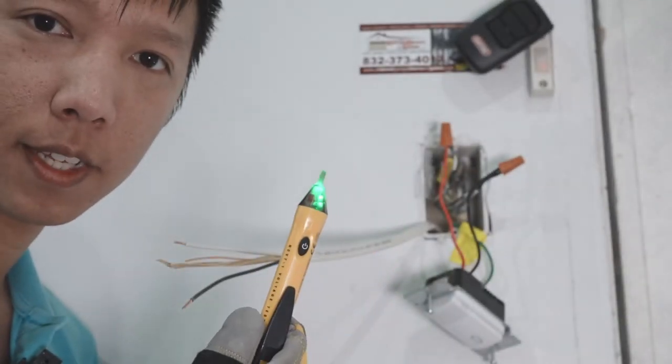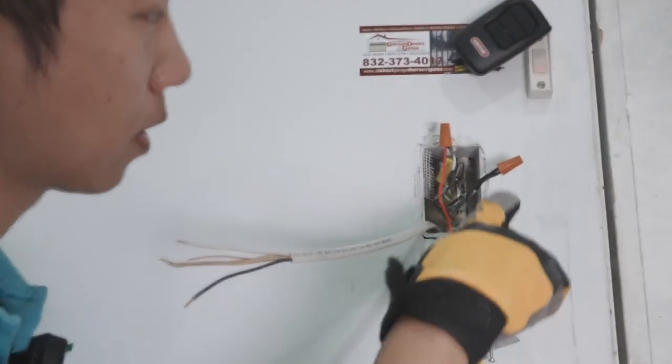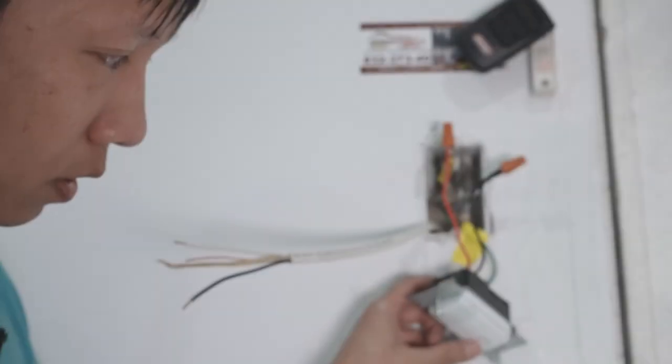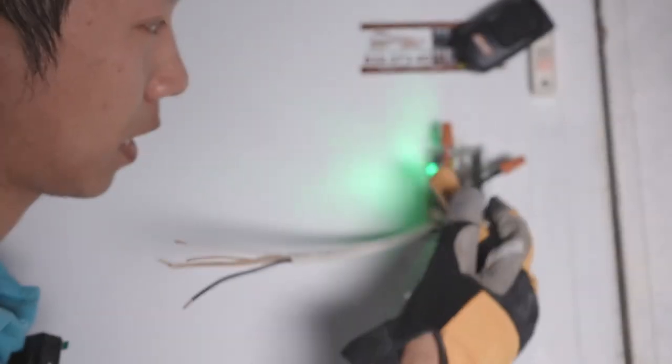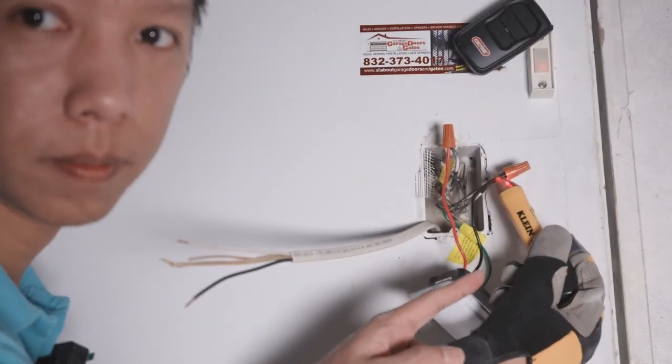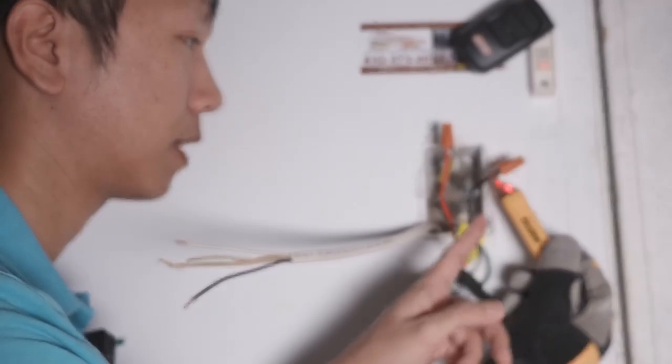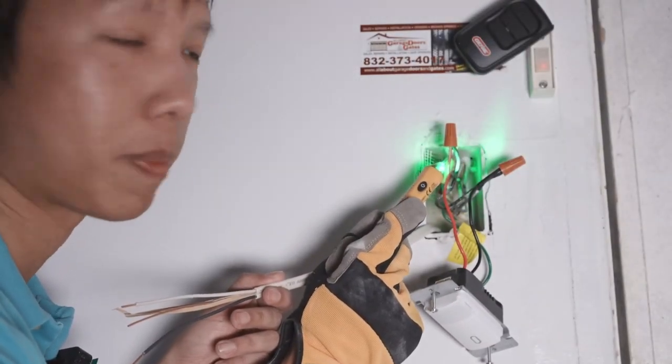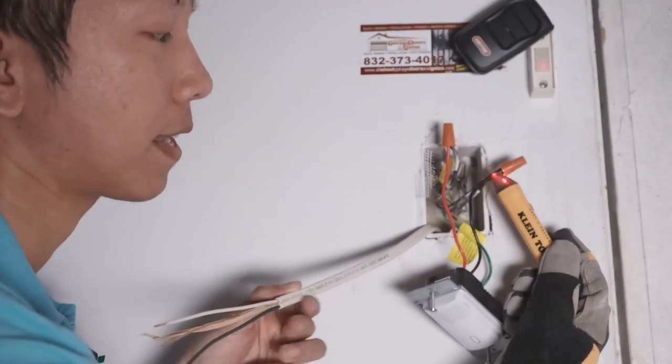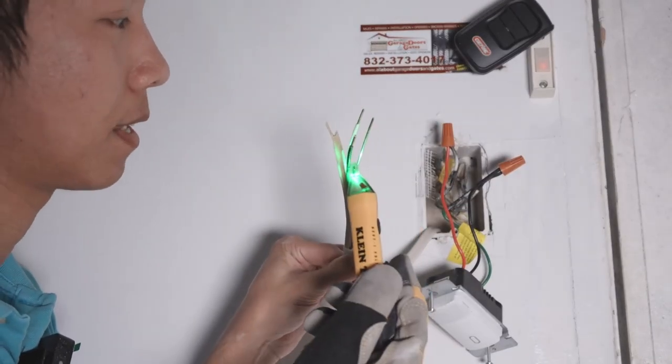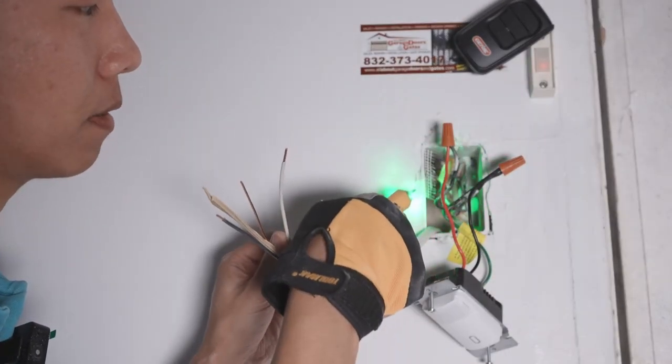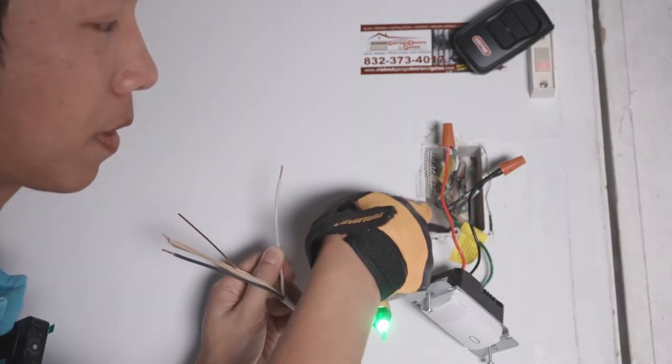We're going to use this tester pen to check which line has the power even though the light is off. We're going to turn off the light, we're going to use our pen and check. This one here has the power. This one here does not have the power. So we're going to connect our outlet cable, the black side to this one, the ground one to the green together, and the white one to the white one that is inside.